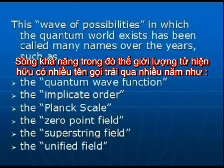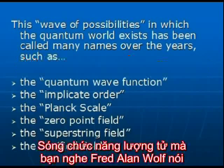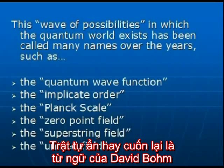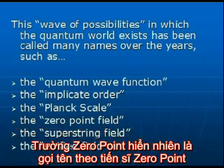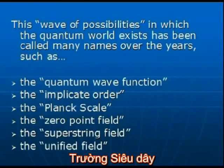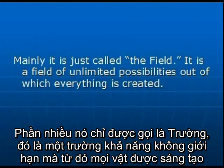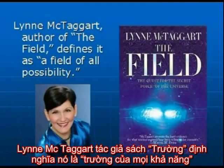This wave of possibilities in which the quantum world exists has been called many names over the years, such as the quantum wave function, which Fred Alan Wolf talked about; the implicate order, which was David Bohm's term; the Planck scale, named after Dr. Max Planck; the zero point field; the super string field; and the unified field. Mainly it is just called 'the field' — a field of unlimited possibilities out of which everything is created. Lynn McTaggart, author of The Field, defines it as a field of all possibility.